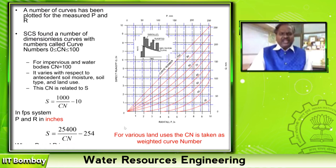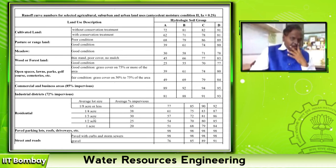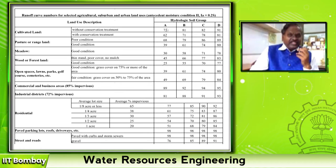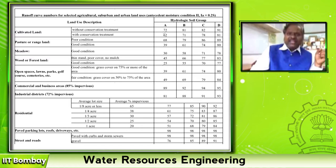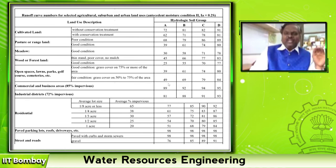In a basin, you cannot expect uniform soil type or land use — it will be a mixture. We compute a weighted average curve number: for each area, pick the curve number, multiply by that area, sum them all, and divide by total area. For example, if there is cultivated land and open plots with soil types A and B, multiply each curve number by its area and divide by total area to get the weighted average curve number.